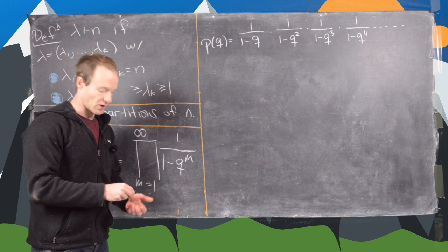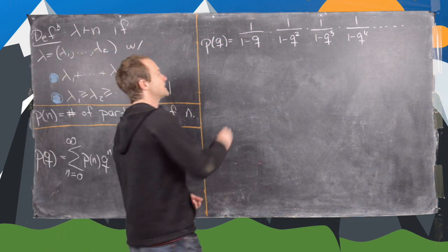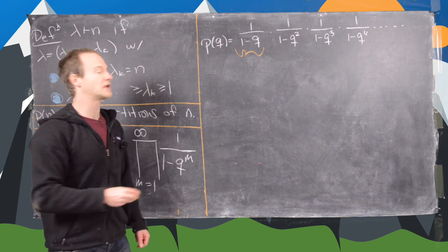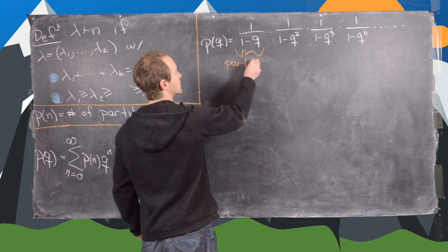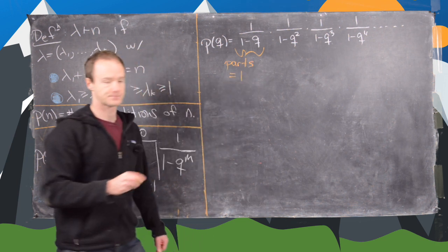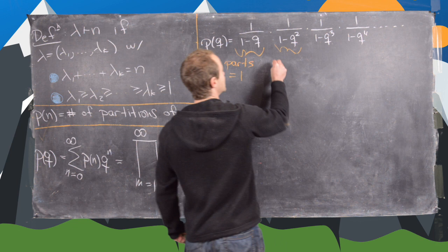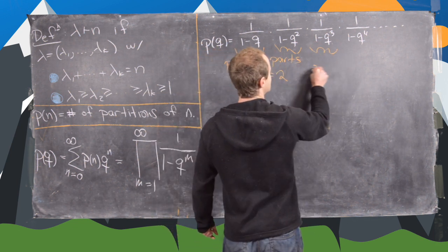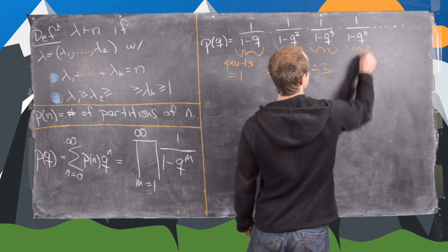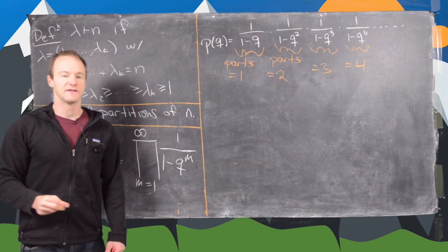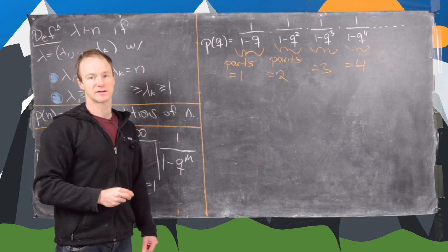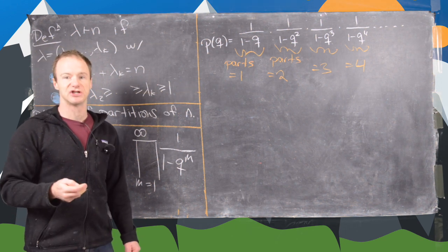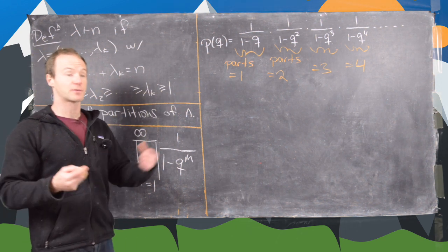Let's see what each of these factors in the product give us. The first factor gives us parts of the partition equal to 1, the second gives us parts equal to 2, the third gives us parts equal to 3, and the fourth gives us parts equal to 4. That's how we interpret each factor — this was sketched in the proof in the last video. Now let's expand each of these as a geometric series and interpret some more.